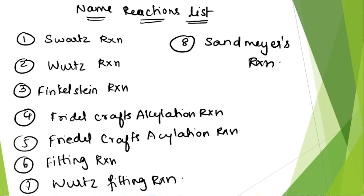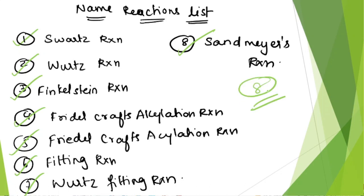There are 8 name reactions in this chapter. All were covered in detail in previous sessions. Write them in a separate note — they are very important. The reactions are: Swartz reaction, Wurtz reaction, Finkelstein reaction, Friedel-Crafts alkylation, Acylation reaction, Fitting reaction, Wurtz-Fitting reaction, and Sandmeyer reaction.